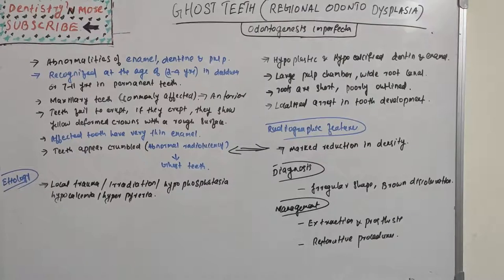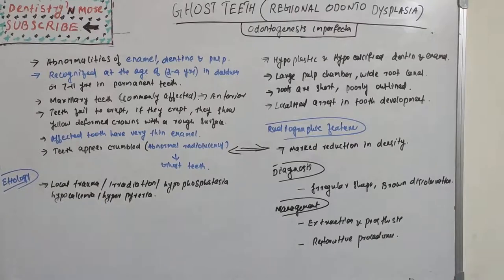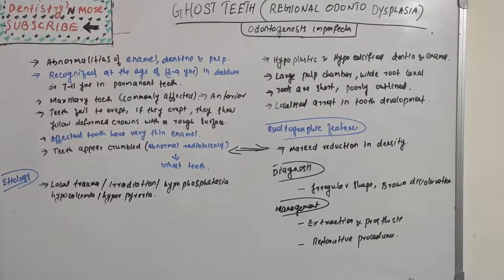Ghost teeth are most commonly diagnosed by clinical and radiographic appearances. Clinically there is irregular-shaped brown discoloration, and radiographically the ghost appearance of the tooth is easily identifiable. Management includes either extraction of the affected teeth followed by prosthetic rehabilitation, or restorative procedures such as root canal treatment, depending on the patient's clinical profile.